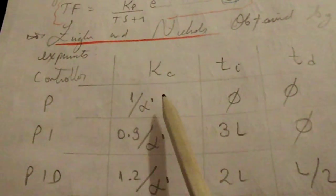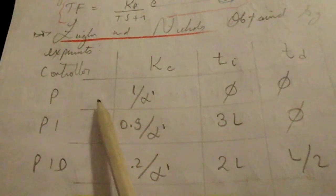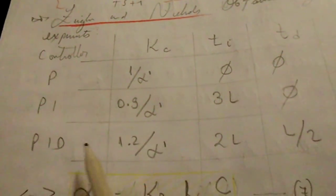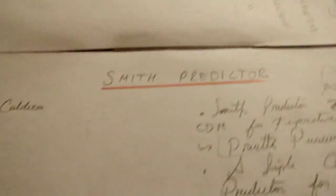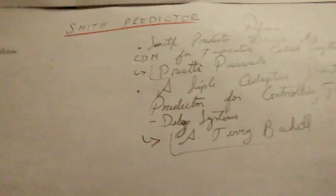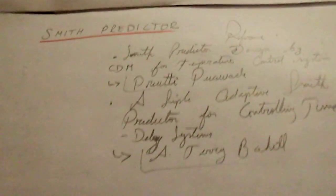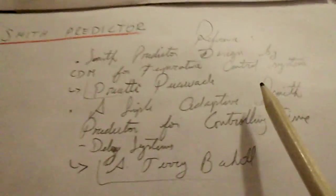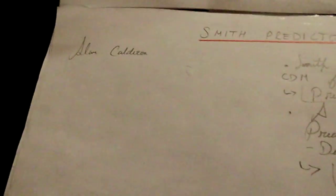By these parameters we can obtain the controller parameters for proportional, PI, and PID — as proposed by Ziegler and Nichols. But what happens if we don't know exactly the value for the time delay of the system, or the reference given by these authors in order to use some equations?